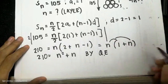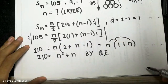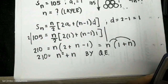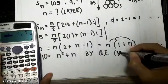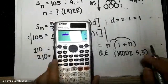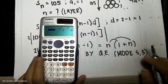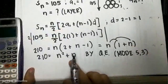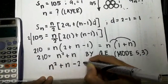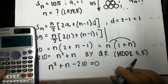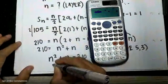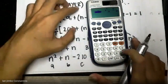Using the quadratic equation — you can use Mode 5, 3 on your calculator. When you press Mode 5, 3, it will ask for coefficients A, B, and C. For our equation n² + n − 210 = 0, the coefficient A is 1, B is 1, and C is −210. Input these values into your calculator.